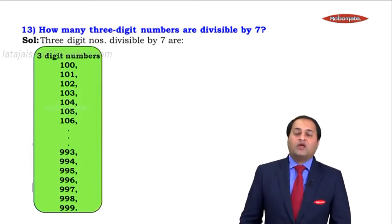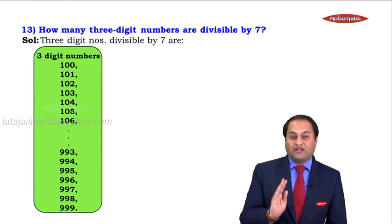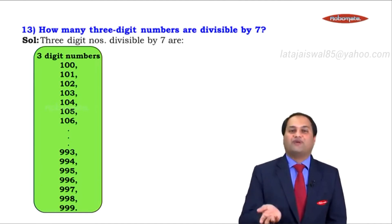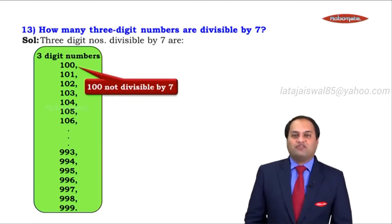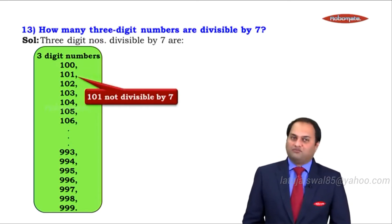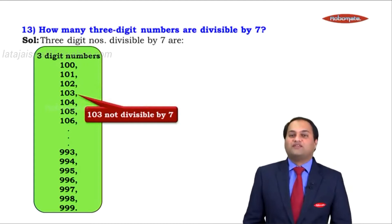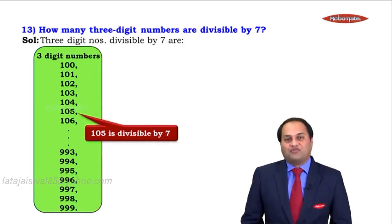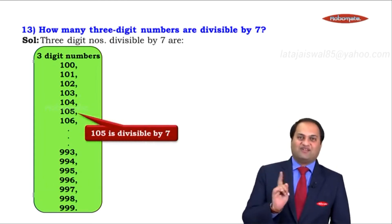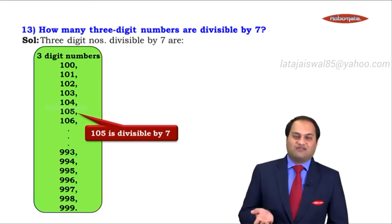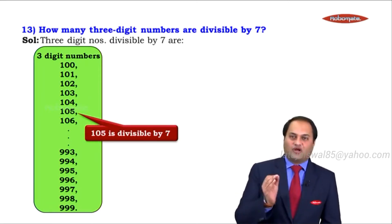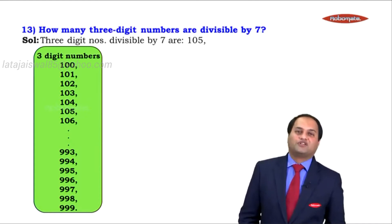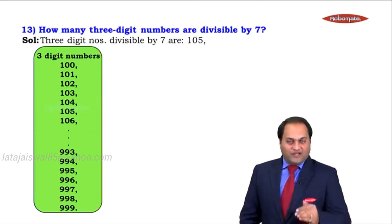Out of these numbers, only those divisible by 7 will form our AP. Is 100 divisible by 7? No. 101? No. 102? No. 103? No. 104? No. 105? Yes — 7 × 15 = 105. So 105 is the first three-digit number divisible by 7, and it becomes the first term of our AP.